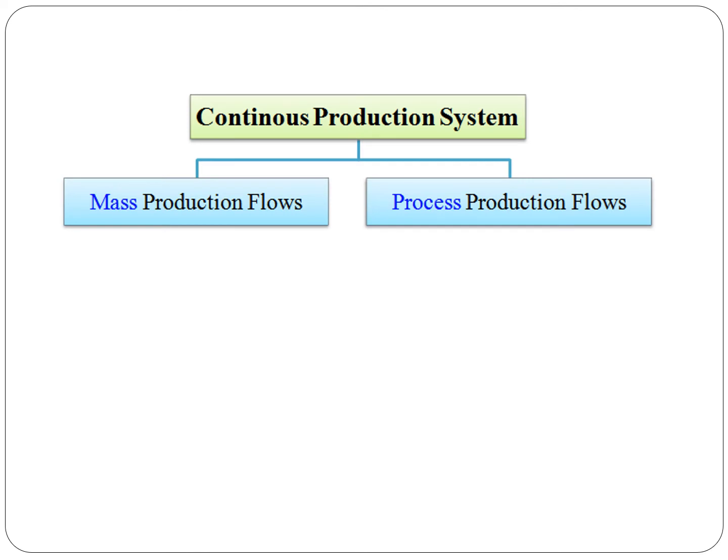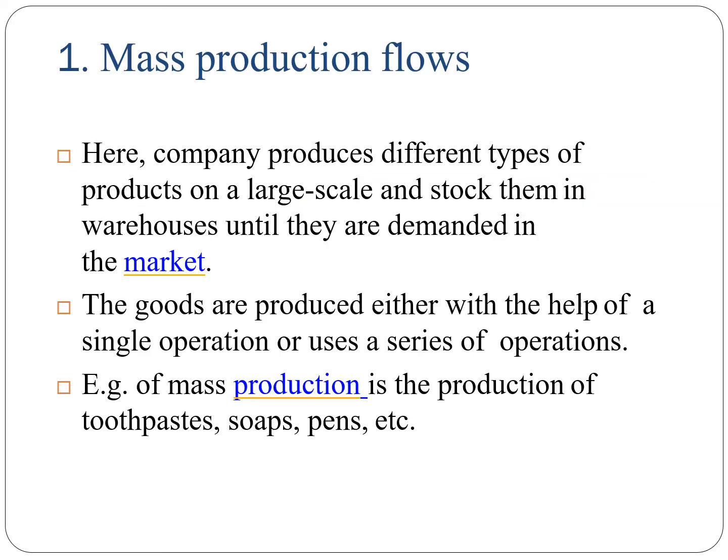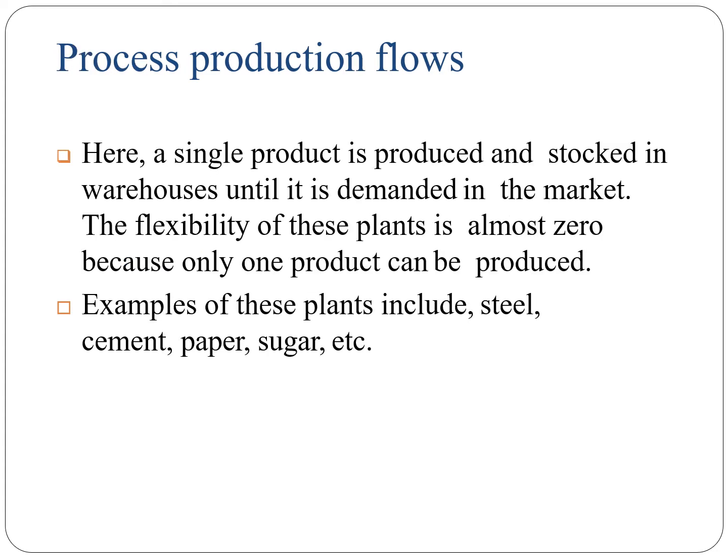There are two types of continuous production systems: one is mass production and the other one is process production. In mass production, the company produces different types of products on a large scale and stocks them in a warehouse until they are demanded in the market. Examples of mass production include toothpaste, soap, pan, etc.